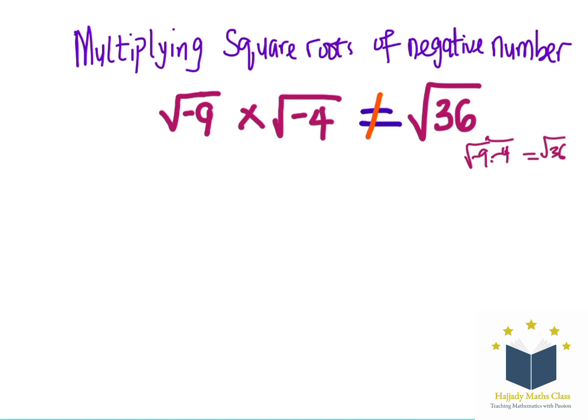Now, with writing the root of negative 9, this can be written as negative 1 multiplied by 9 times the same thing with negative 4, which is the same thing as negative 1 multiplied by 4, which still gives the same thing.